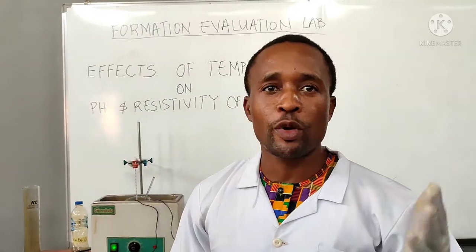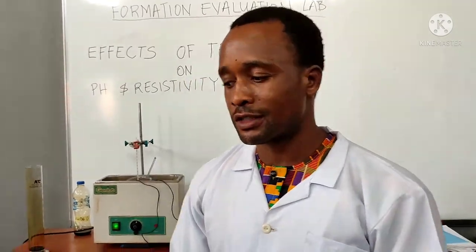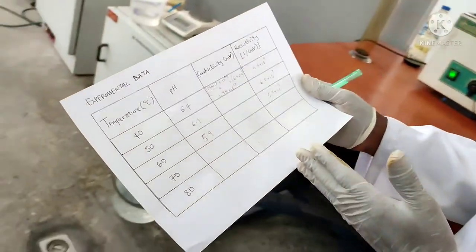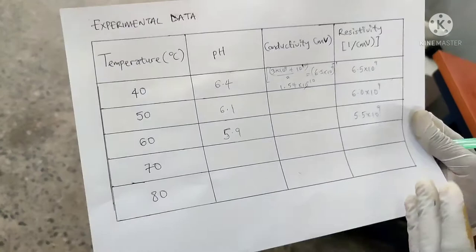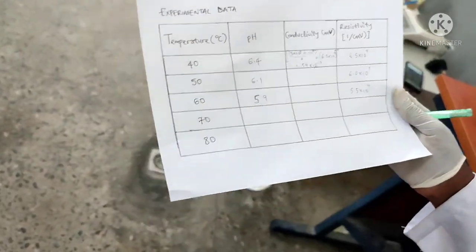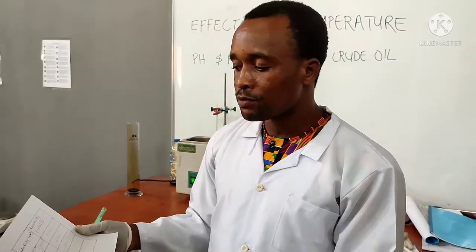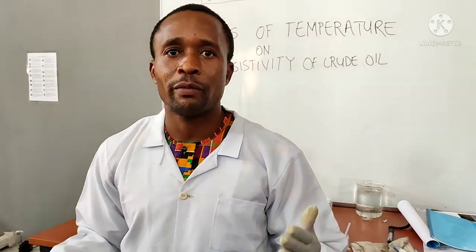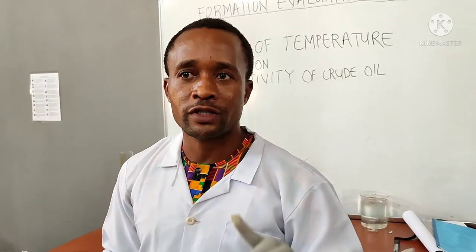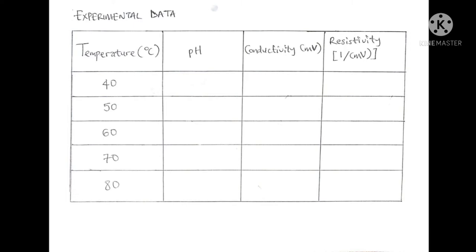At the end of the experiment you are expected to plot a graph of pH of the crude oil against temperature, and also evaluate a mathematical model or relationship between the pH and the temperature of the crude oil. Lastly, you are meant to derive the resistivity log of this setup, which is a plot of resistivity against temperature of crude oil. Thank you.